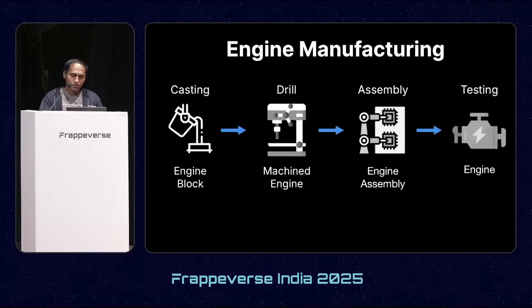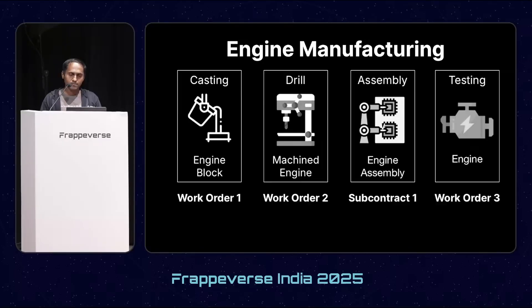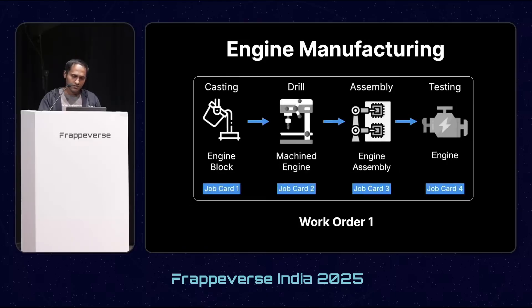Next is sequential manufacturing. Suppose you want to use the output of one operation as an input or raw material for the next operation, and one of the operations is subcontracting. To handle this use case, currently the user has to make work orders for each operation and a subcontracting order for the subcontracting operation. The problem was they had to manage multiple work orders and tracking all of them under a single entity was hard.